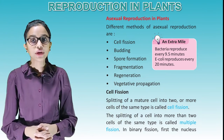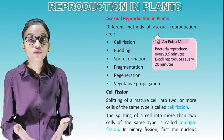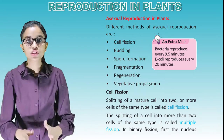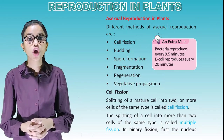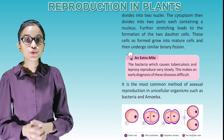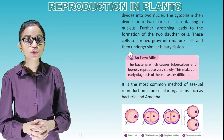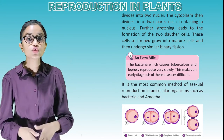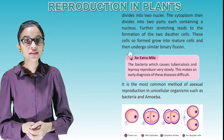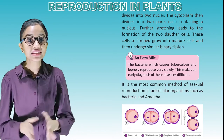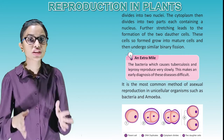Bacteria reproduce every 9.5 minutes. E. coli reproduces every 20 minutes. Cell fission: splitting of a mature cell into two or more cells of the same type is called cell fission. The splitting of a cell into more than two cells is called multiple fission. In binary fission, first the nucleus divides into two nuclei, then the cytoplasm divides into two parts, each containing a nucleus. Further stretching leads to the formation of two daughter cells. These cells grow into mature cells and then undergo similar binary fission. It is the most common method of asexual reproduction in unicellular organisms such as bacteria and amoeba.